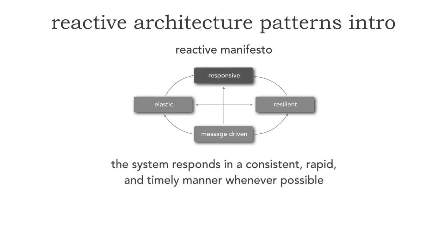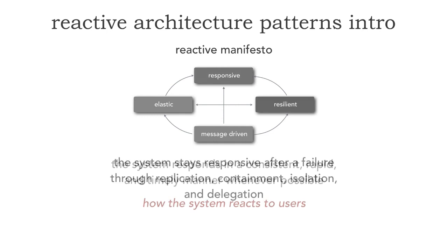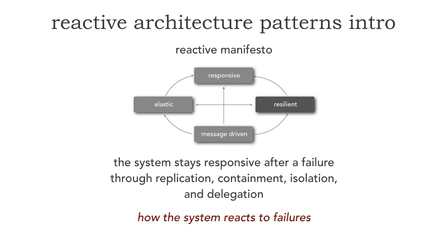First, we should build systems that are responsive — in other words, the system responds in a consistent, rapid, and timely manner whenever possible. This is how the system reacts to users. We should also build systems that are resilient, meaning the system stays responsive after a failure through replication, containment, isolation, and delegation. This is basically how the system reacts to various failures, even at a macro or micro transactional level.